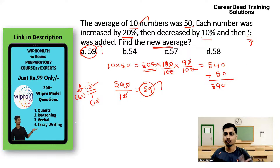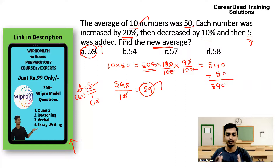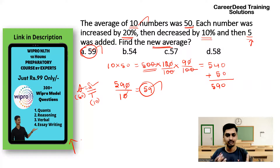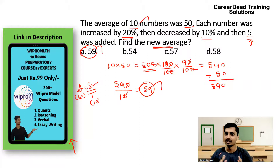Now before moving to the next question, this is our actual Wipro NLTH preparatory course. It is a 10-hour package and it covers quantitative aptitude, reasoning, verbal, and essay writing. If you have a mobile phone you can access this material. We have provided the link in the description. This is completely for the benefit of students — that's the reason we have fixed only 99 rupees.